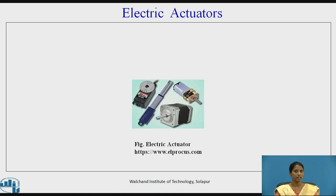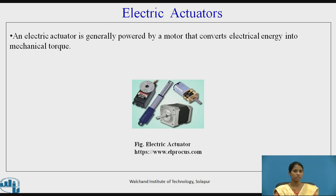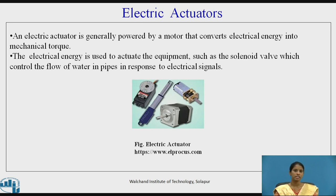The next type is electric actuators. Electric actuators are generally powered by a motor that converts electrical energy into mechanical torque. The electrical energy is used to actuate equipment such as the solenoid valve, which controls the flow of water in pipes in response to electric signals. The figure shows various types of electric actuators.